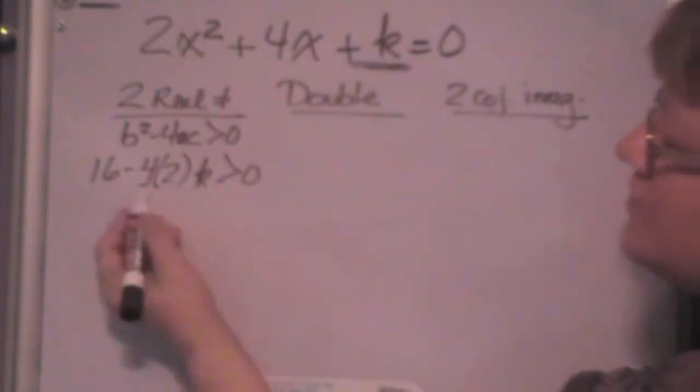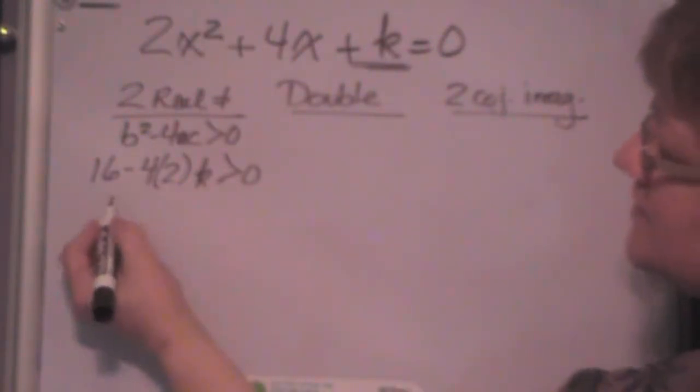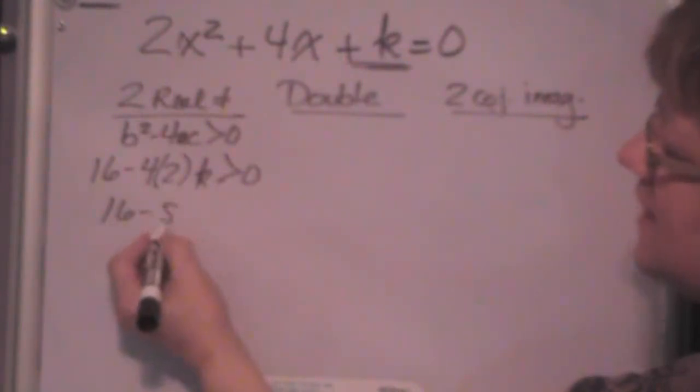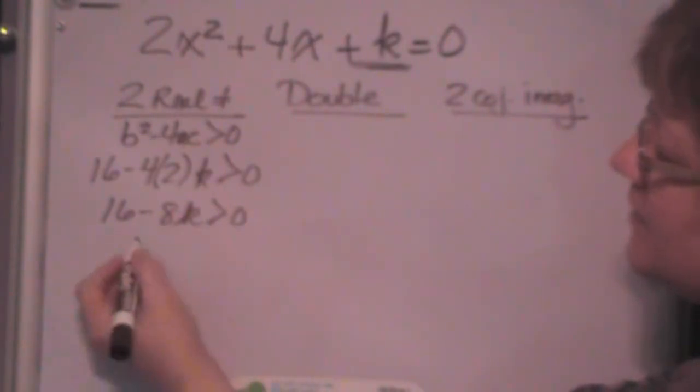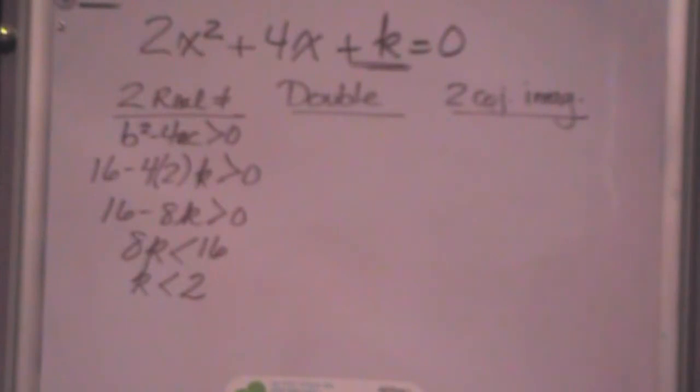Remember our c is k here. So now you just solve this inequality for k. So this is 16 minus 8k greater than zero. And if I add k to both sides and flip it around, I get 8k is less than 16. Divide both sides by 8, k is less than 2. So for every k less than 2, I will get two real unequal roots.